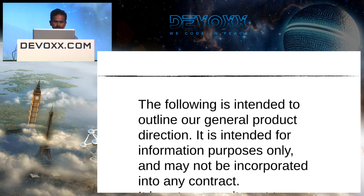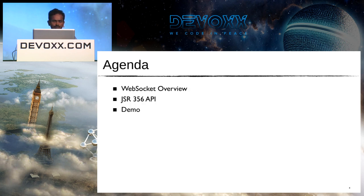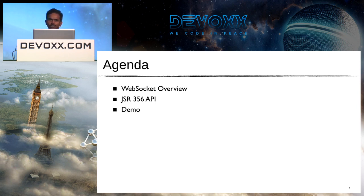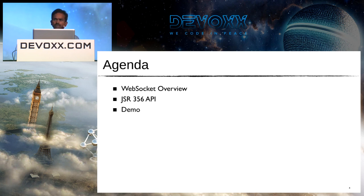This is a standard safe harbor statement from Oracle. Briefly, we'll talk about WebSocket — for those not familiar, we'll go over the protocol. Then the bulk of the talk will cover the JSR 356 API, and we'll have a small demo if we have time.